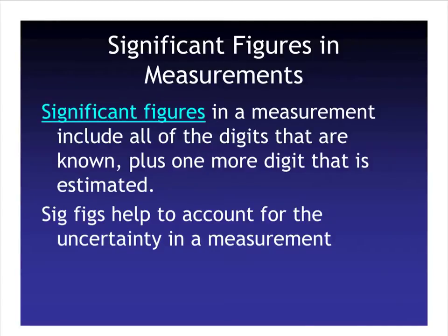When we're measuring, we're going to have significant figures. Significant figures include all of the digits that are known plus one more digit that is estimated. With a digital scale, it gives you a set number of digits and you write them all down. With a triple beam balance, the markings allow you to estimate at least one more digit. Significant figures help to account for the uncertainty in a measurement, and we want to use all the numbers we can and estimate one more to be as accurate as possible.